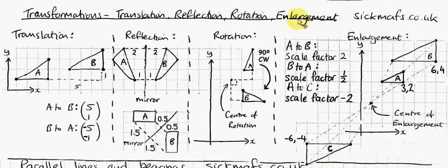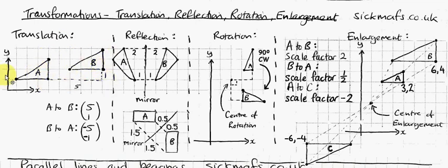The four transformations are: Translating, Reflecting, Rotation, and Enlargement. So what is translation? That's the only one that's not obvious. Basically it's a sliding effect, which is actually the easiest thing to do. I can slide this shape five across and one up. I can do that for one corner at a time, and it will translate the whole shape.